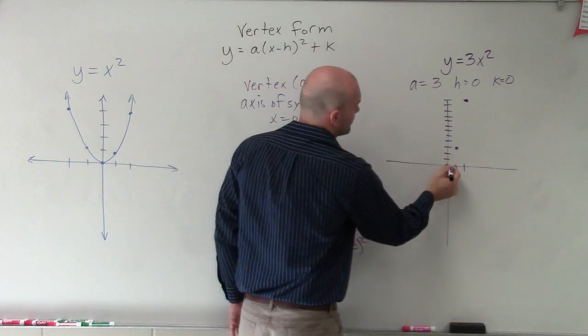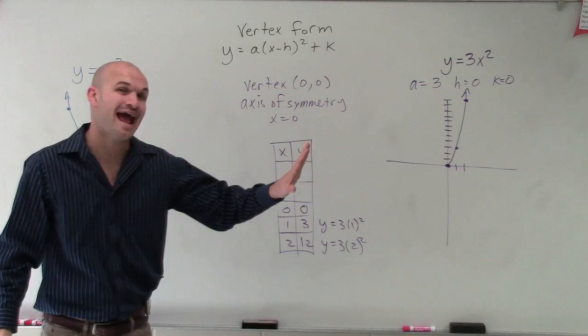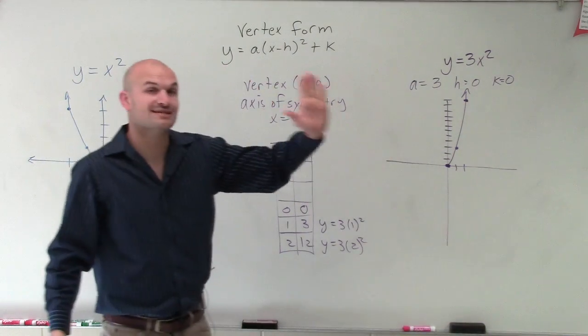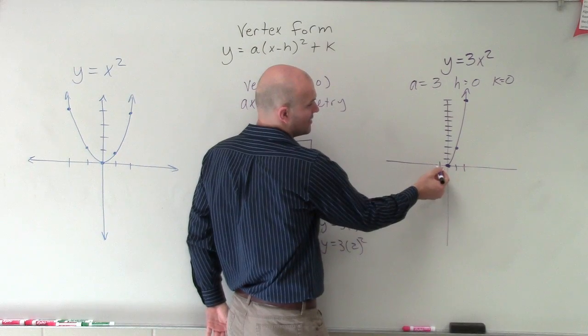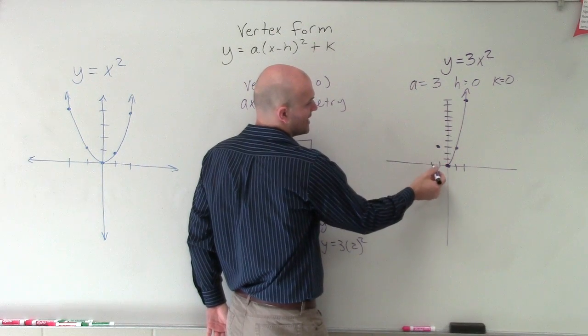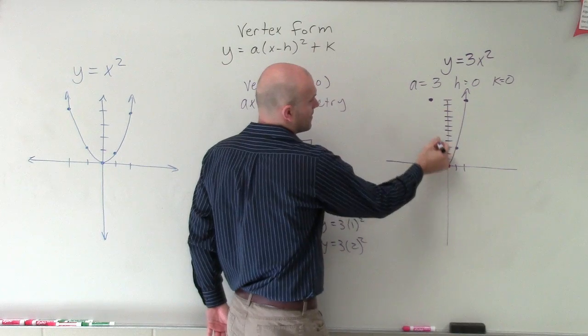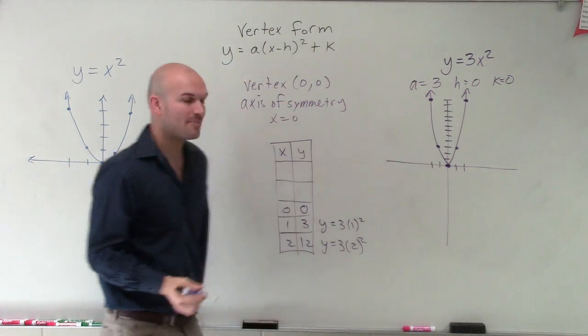So we can see that my graph takes the shape of this. But remember, that's only half of it, because now I can reflect it over my axis of symmetry, which is at 0. So at negative 1, I'll go up 3. And at negative 2, I'll go up to 12. And that will now complete my parabola.